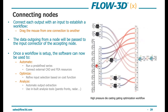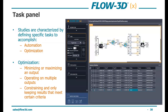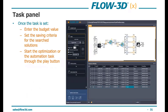Next we have the task panel. Studies are characterized by defining specific tasks — usually automation or optimization. For an optimization, we're minimizing or maximizing an output, operating on multiple outputs, or constraining results to meet specific criteria. Once the task is set, we enter a budget value — the number of simulations or workflow iterations we'd like Flow3DX to run — set the saving criteria for solutions, and start the optimization or automation task through the play button.